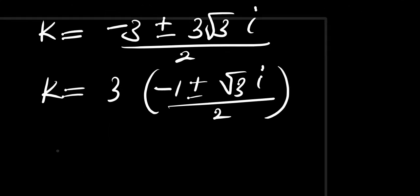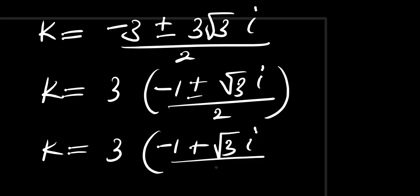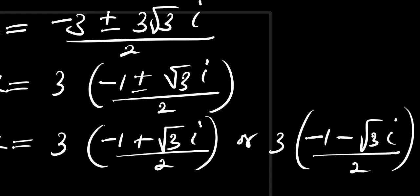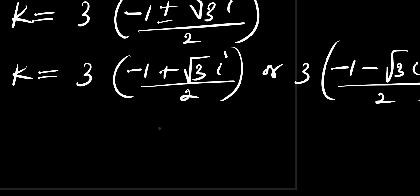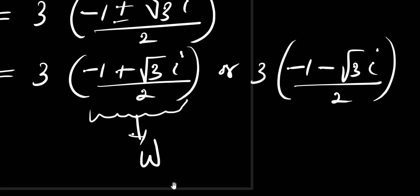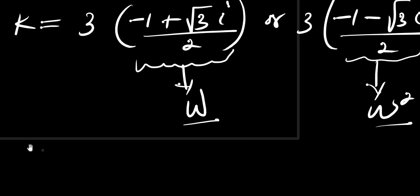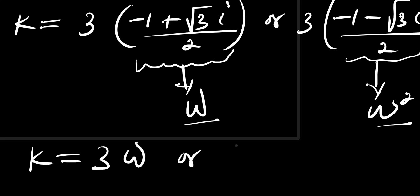So we are going to have k equals 3 times negative 1 plus root 3 times i, divided by 2, or k equals 3 times negative 1 minus root 3 times i, divided by 2. Now remember that the value of negative 1 plus root 3 times i divided by 2 equals omega, and the value of negative 1 minus root 3 times i divided by 2 is omega squared. So this is omega and this is omega squared.